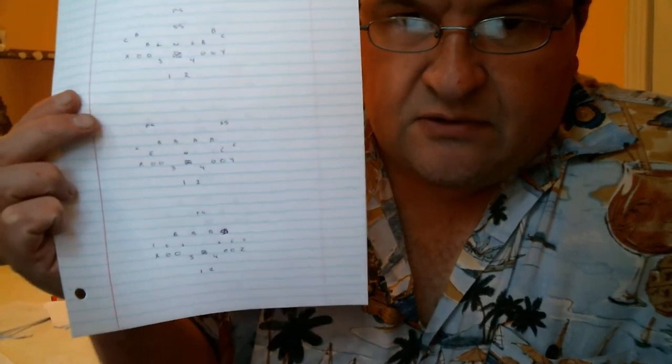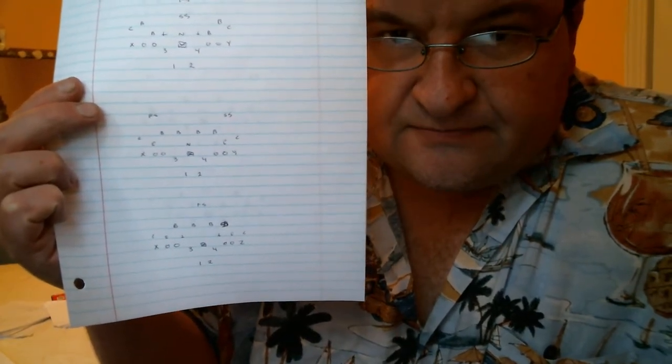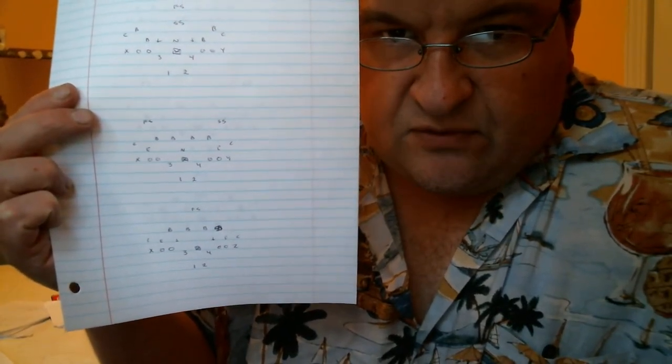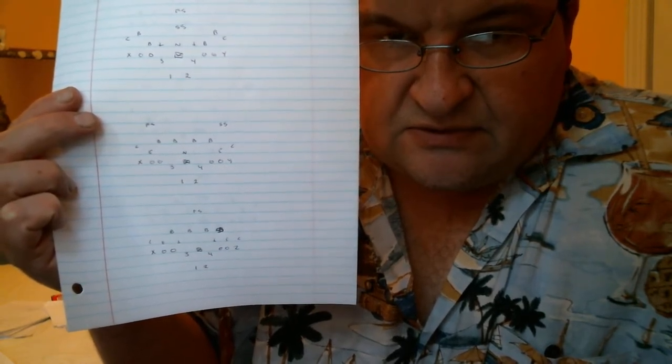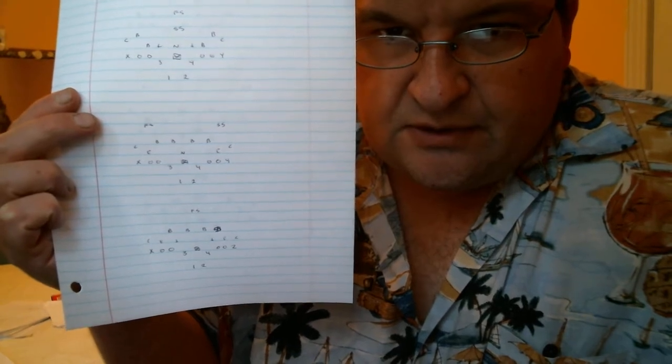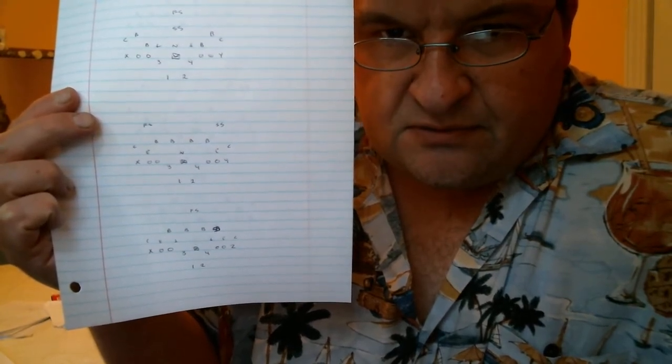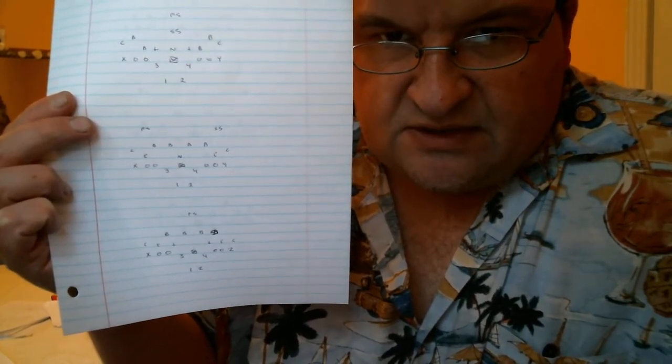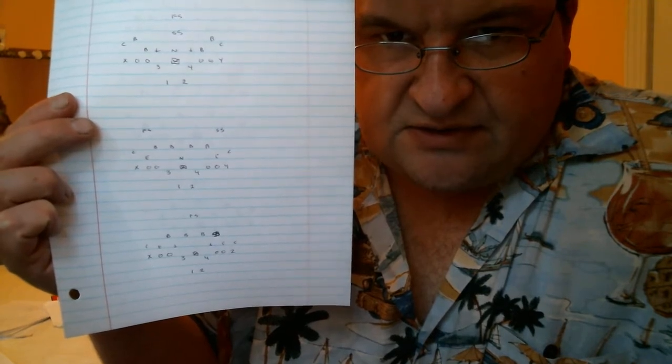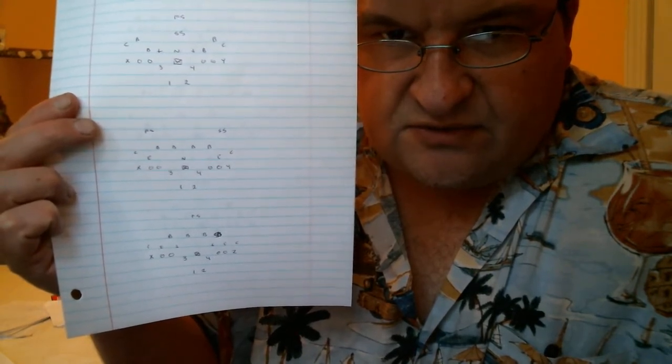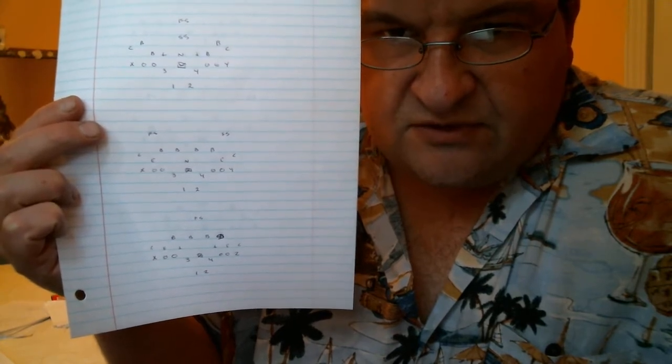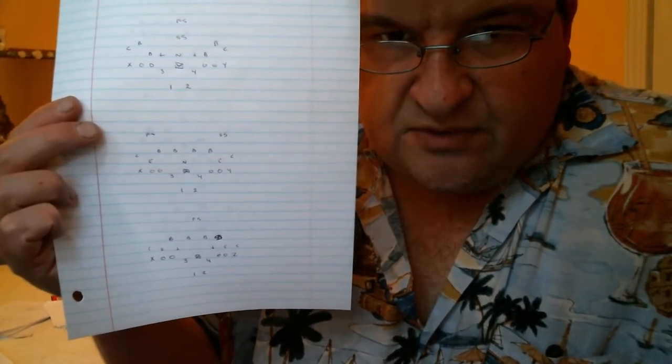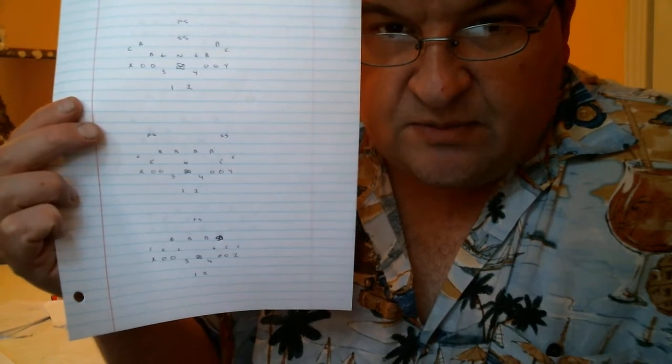The second formation is a 3-4 cover 2. Now the ends are covering the tackles like they would in a normal set. The nose is covering the center. The two inside linebackers are shaded inside and they are man to man against 3 and 4 and my two outside linebackers are covering the guards. Free safety and strong safety are deep and the corners are manned up against X and Y.